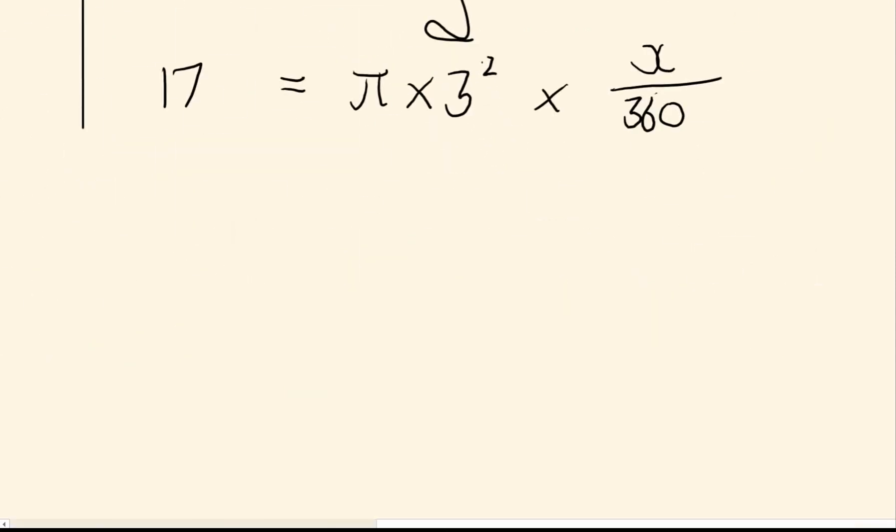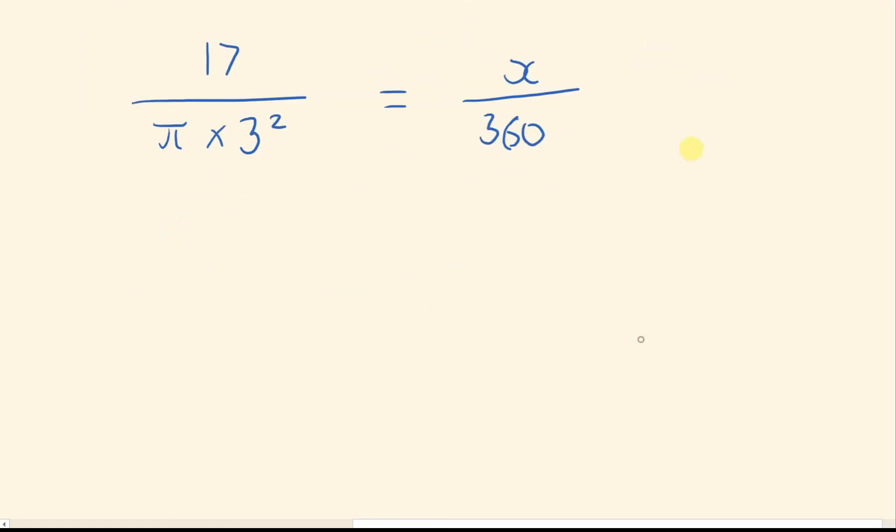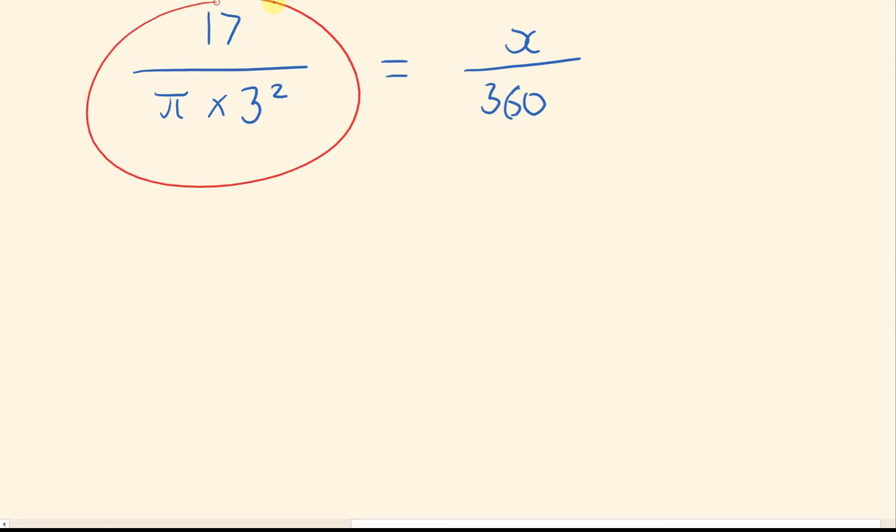And then just like before, we're going to solve it like an equation. First step, I'm times by a bunch of stuff here. And we should know the opposite of times is dividing. So if I do 17 divided by pi times 3 squared, that will leave me with x over 360. Then we have a fraction. The opposite of dividing by 360 is to times by 360. And if we times this fraction by 360, the 360 just goes on top of the fraction.